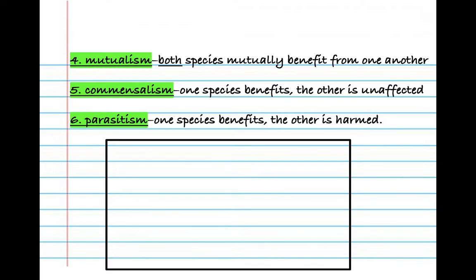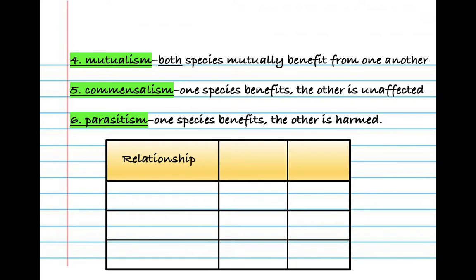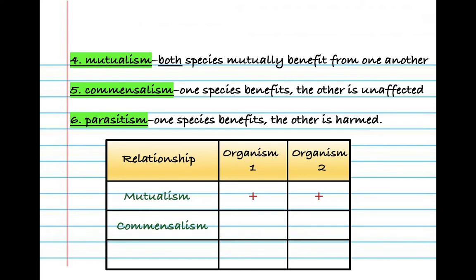Below this, we're going to make a simple table as a cheat sheet. Make three columns and three rows, titled relationship, organism one, and organism two. For mutualism, both organisms benefit — so two plus signs. For commensalism, one benefits and the other is unaffected — so a plus and a zero with a slash. For parasitism, the parasite benefits and the host is harmed — so a plus and a minus sign.